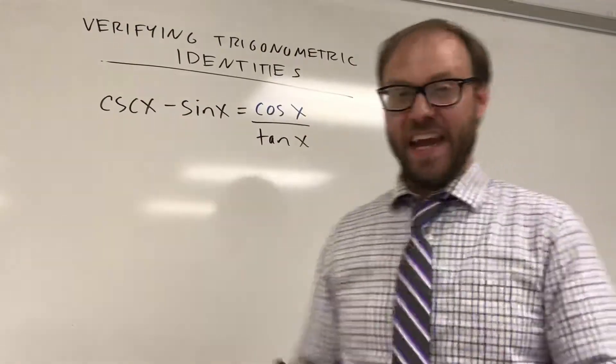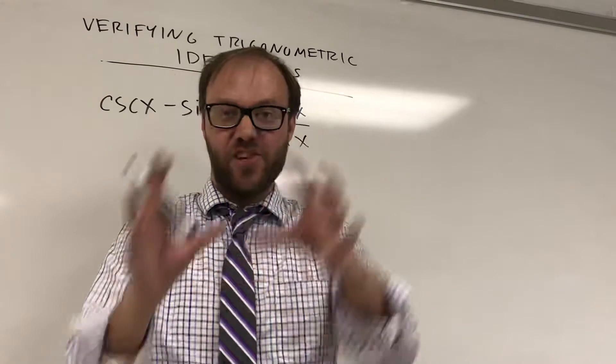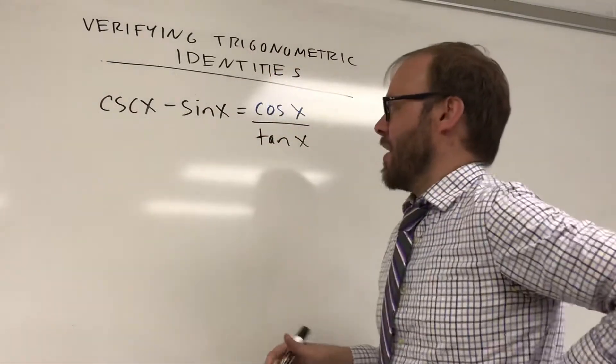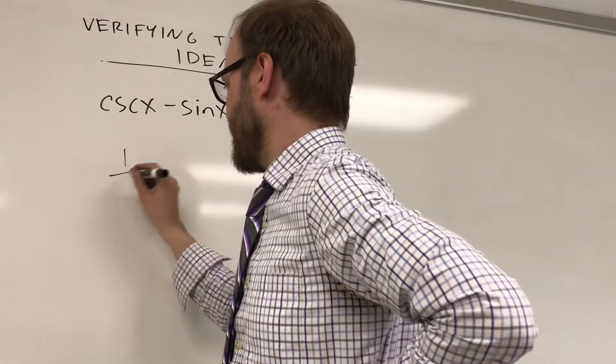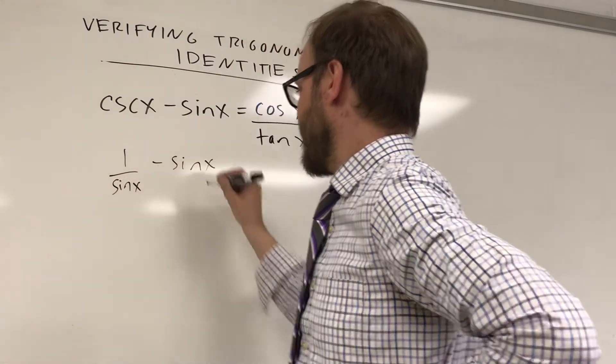But I'm gonna start on the left. And again only change one side of the equation, change it into the other side by substituting equivalent statements. So cosecant's the same thing as one over sine. I'm gonna replace it with one over sine of x, and then I'm not touching anything else.